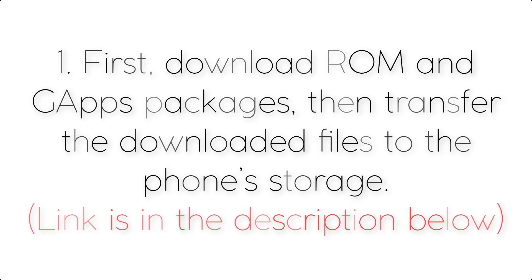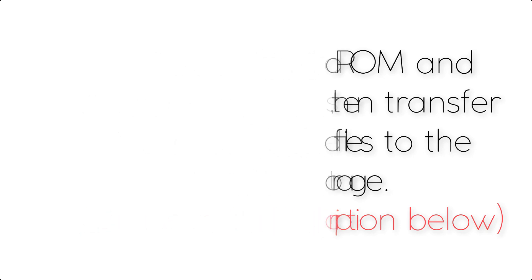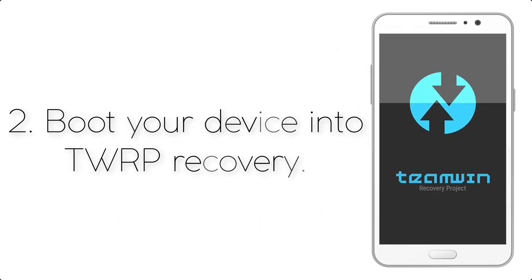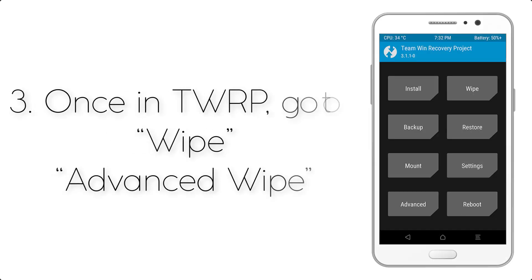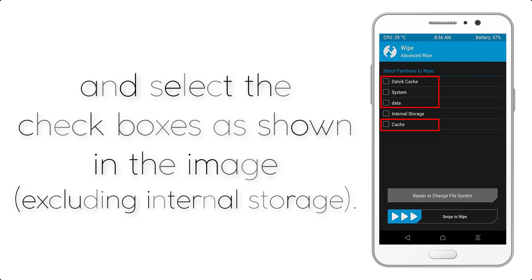Then transfer the downloaded files to the phone storage — the link is available in the description below. Step 2: boot your device into TWRP recovery. Step 3: once in TWRP, go to Wipe, then Advanced Wipe, and select the checkboxes as shown in the image, excluding internal storage.